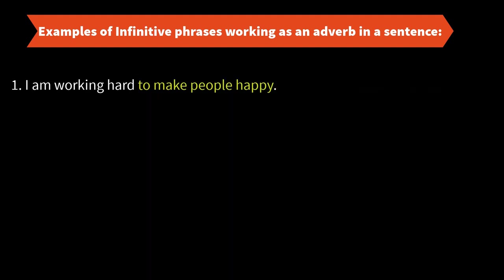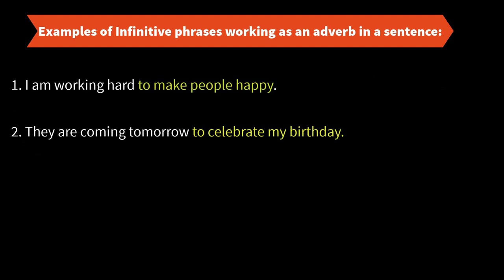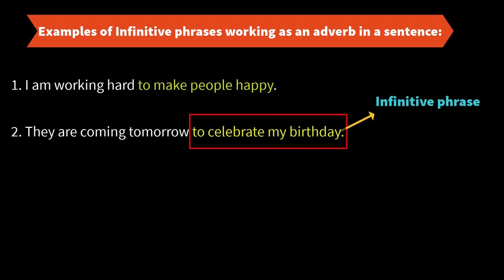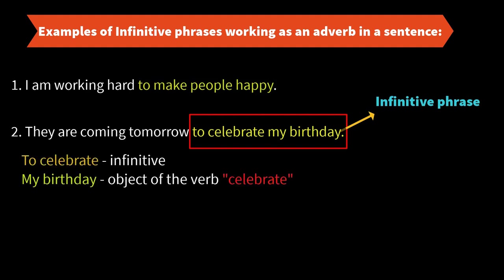They are coming tomorrow to celebrate my birthday. 'To celebrate my birthday' is the infinitive phrase. 'To celebrate' is the infinitive and 'my birthday' is the object of the verb 'celebrate.' It's working as an adverb in the sentence, modifying the verb 'coming.' Why are they coming tomorrow? To celebrate my birthday.